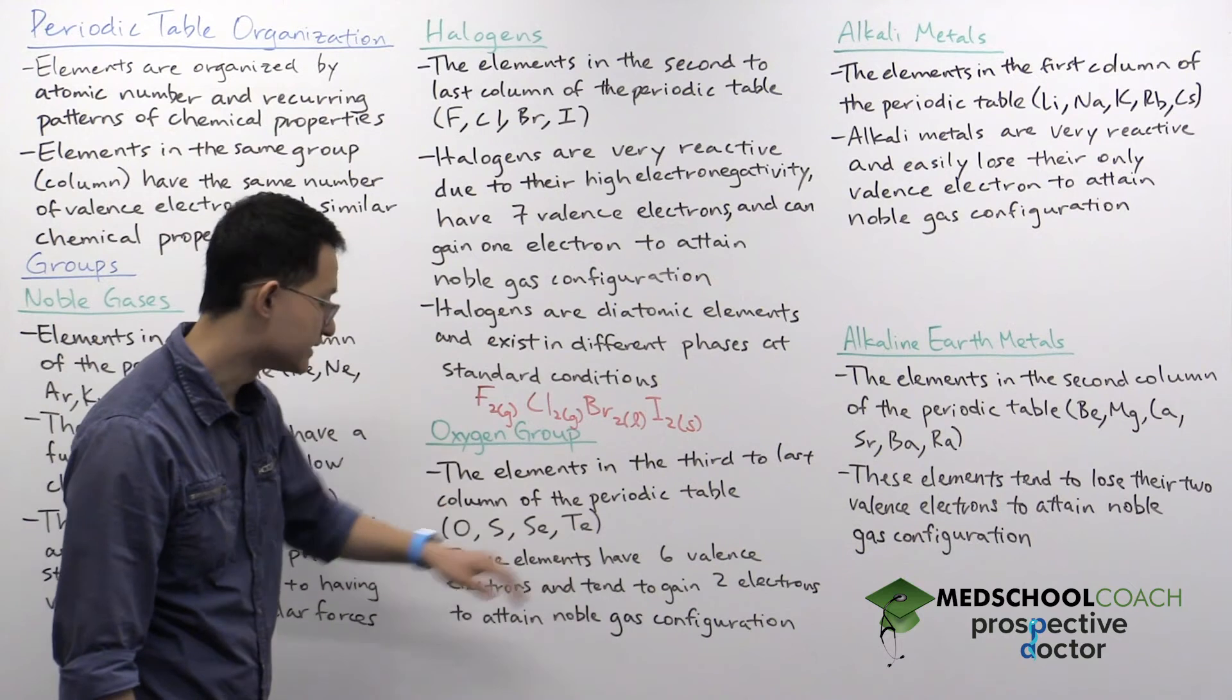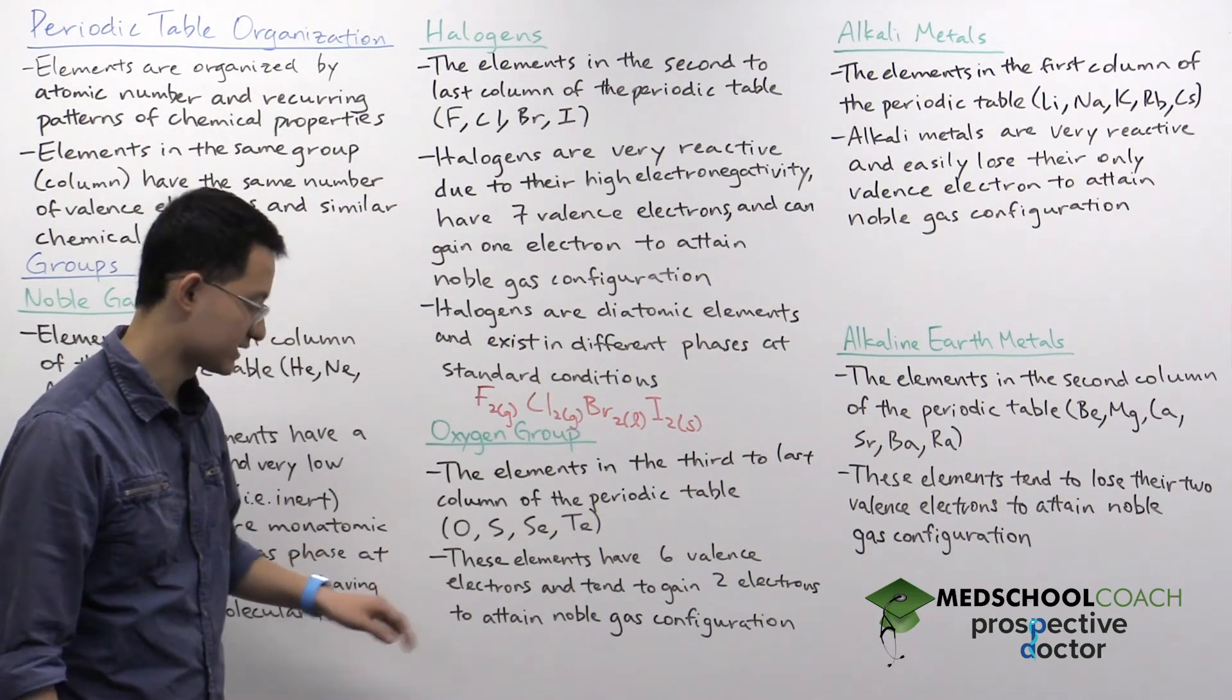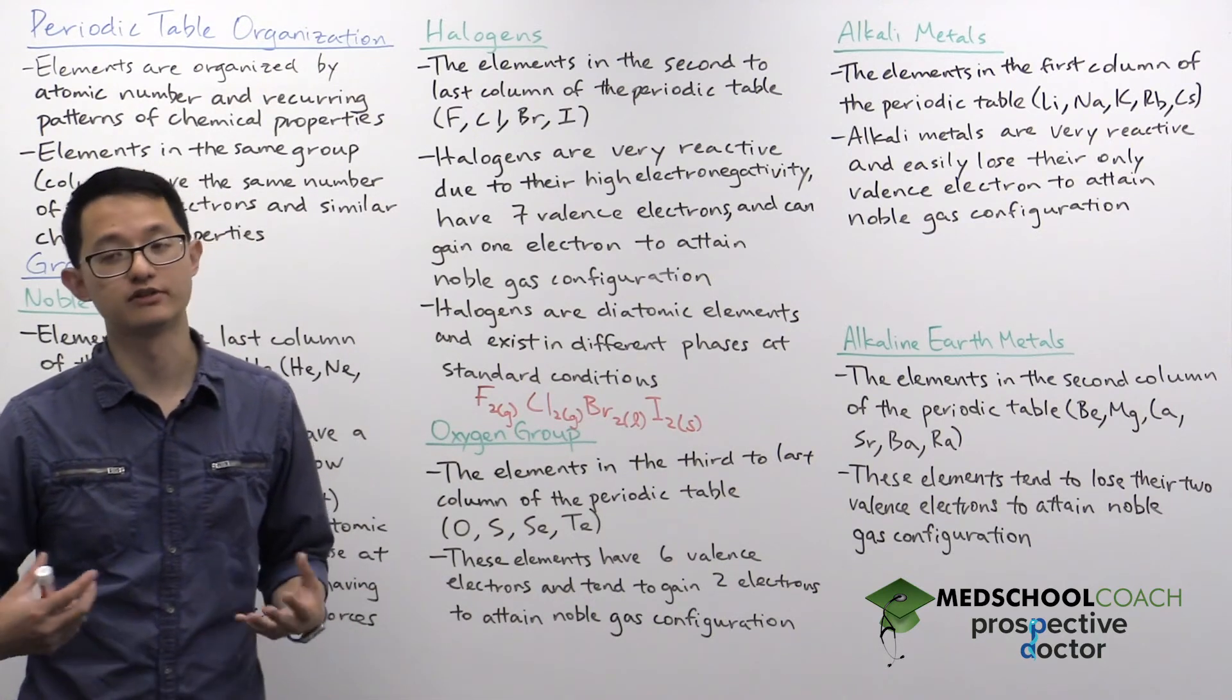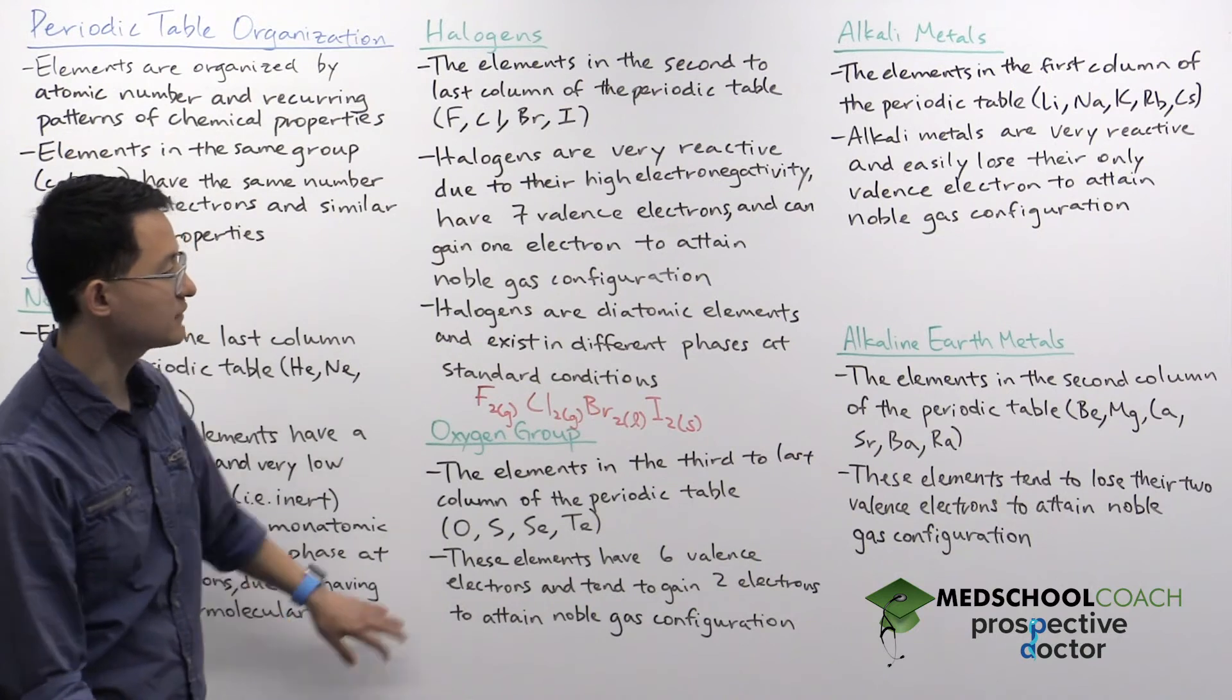sulfur, selenium, and tellurium. And there's nothing super special about these elements. Basically, they have six valence electrons, and they want to gain two more in order to gain noble gas configuration.